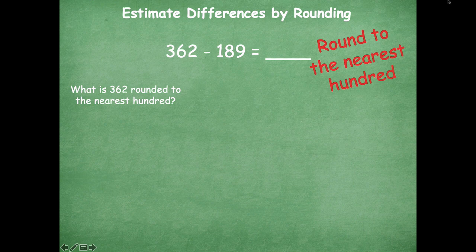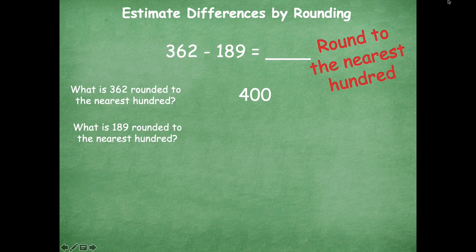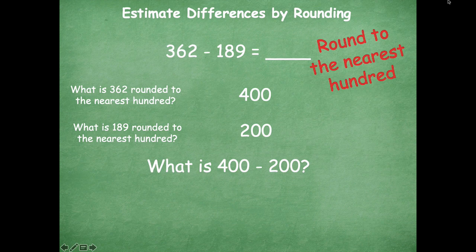All right, we are looking at what is 189 rounded to the nearest hundred. It is 200. So what's 400 minus 200? 200.